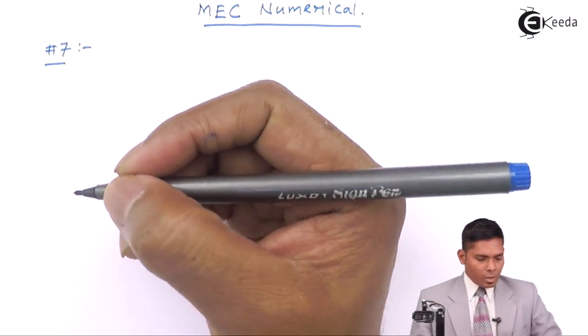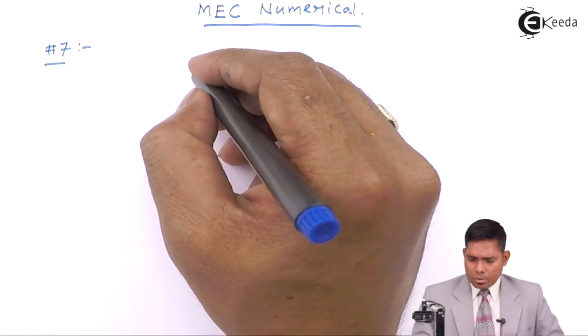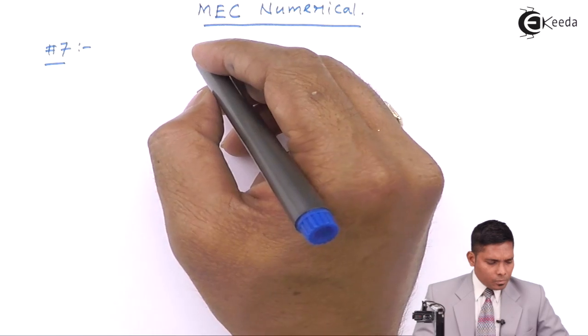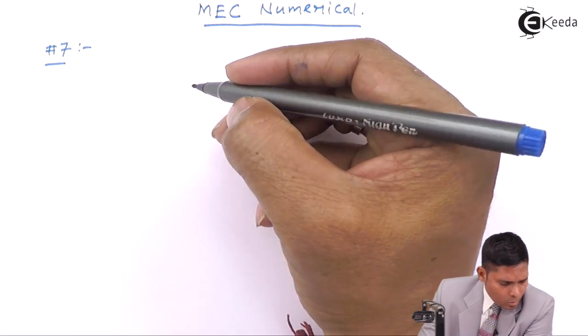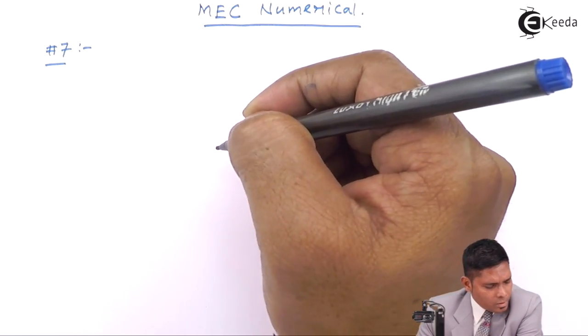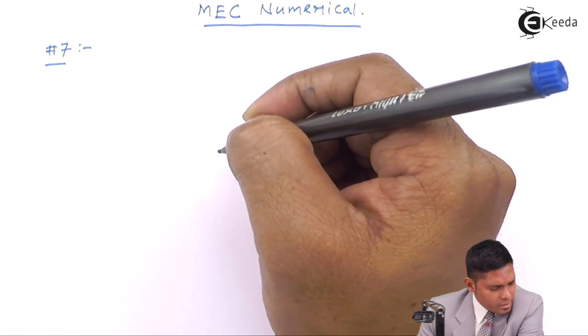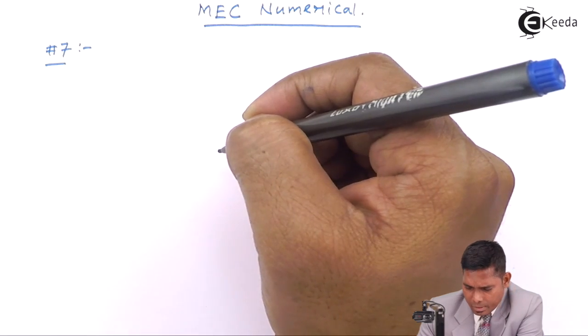Question number seven. The question goes like this: two parallel coaxial circular coils of equal radius and equal number of turns.